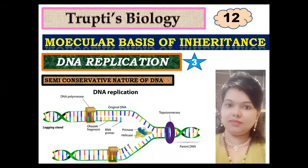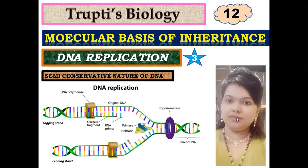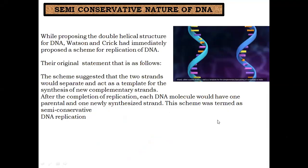So what is the semi-conservative nature of DNA? One strand remains and is retained. Whatever the generation of DNA, it retains that strand. We call it the semi-conservative nature.